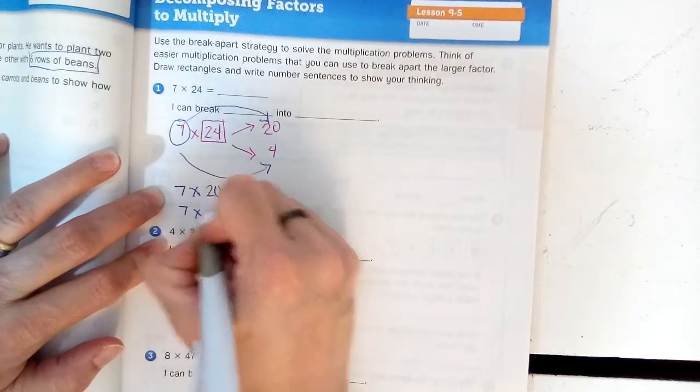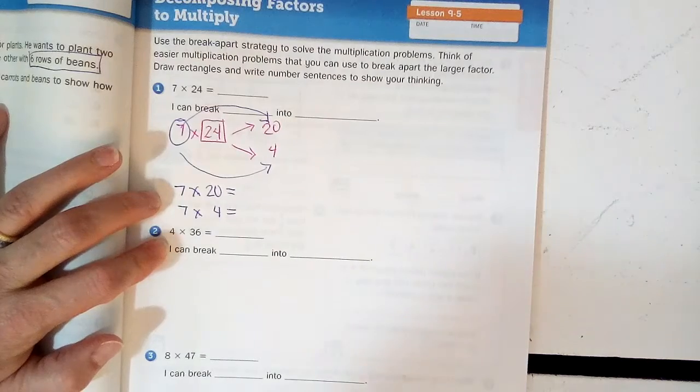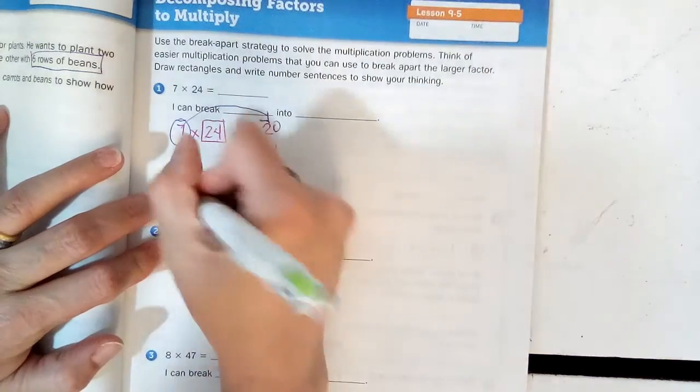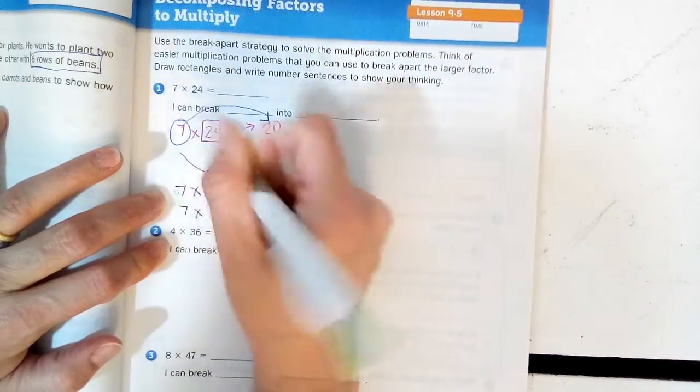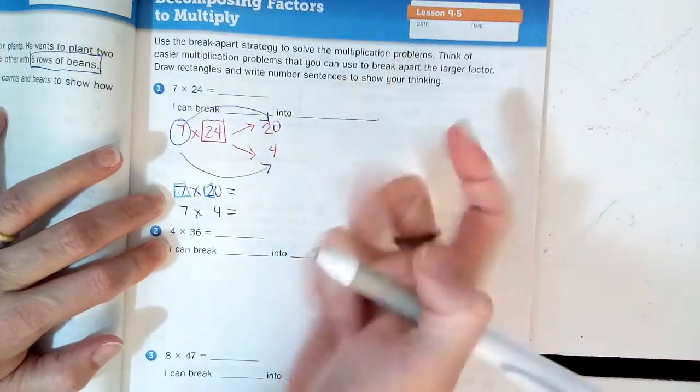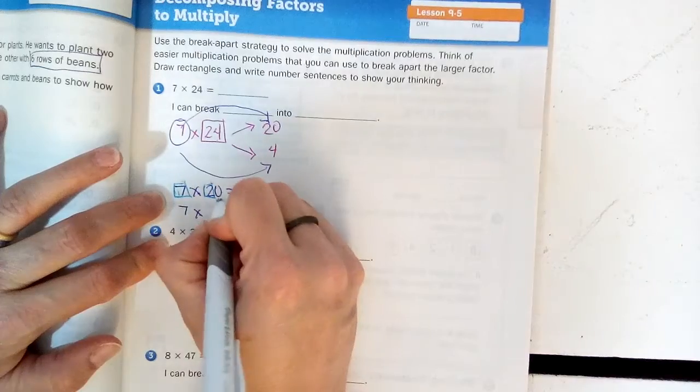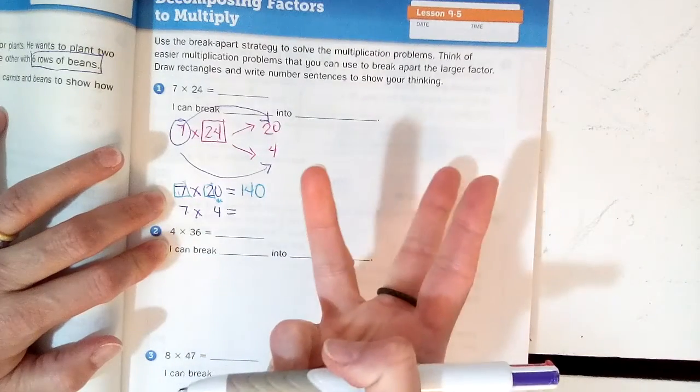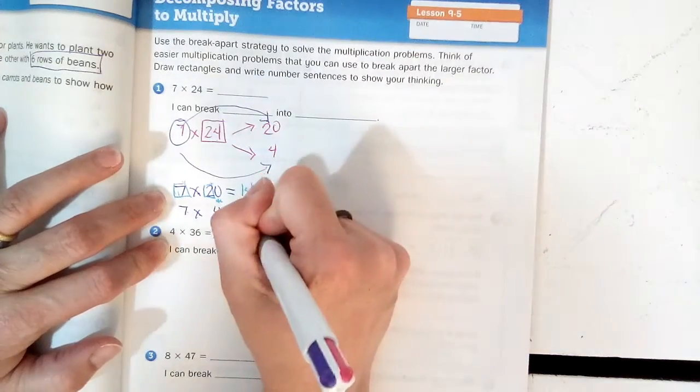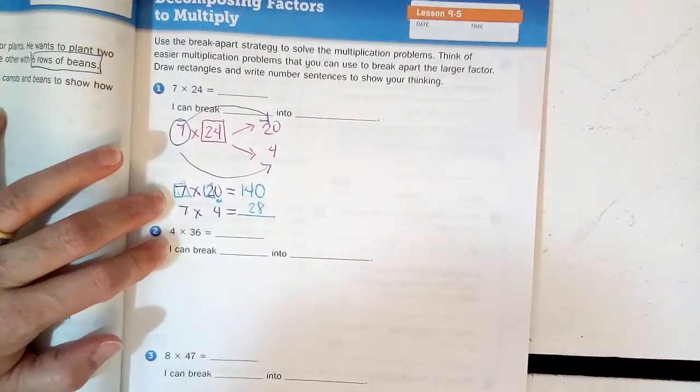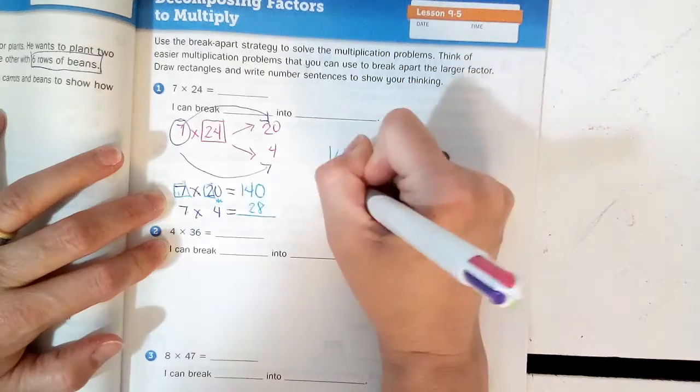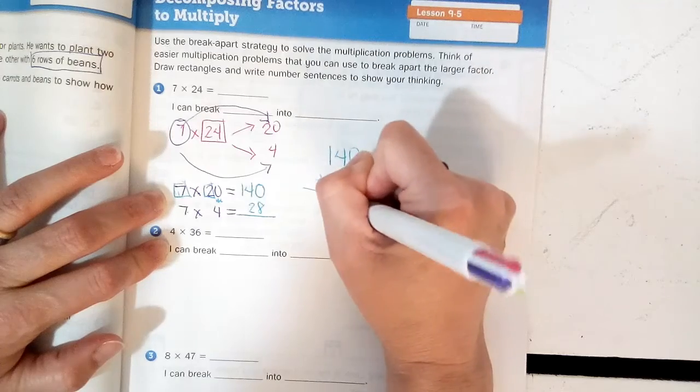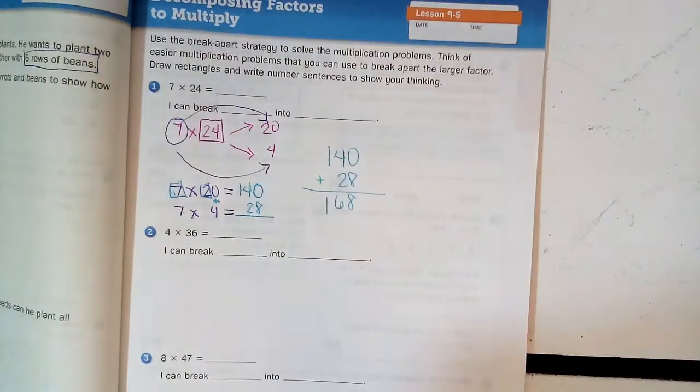And then 7 times 4 equals... if you think back to what we know about what we've done before, we know that 7 times 2 is what? 7, 14. Oh, it's 14. Tack on that 0: 140. Then 7 times 4: 7, 14, 21, 28. Add those two together. Write it big over here: 8 plus 0 is 8, 4 plus 2 is 6, 1 plus nothing is 1. 168.